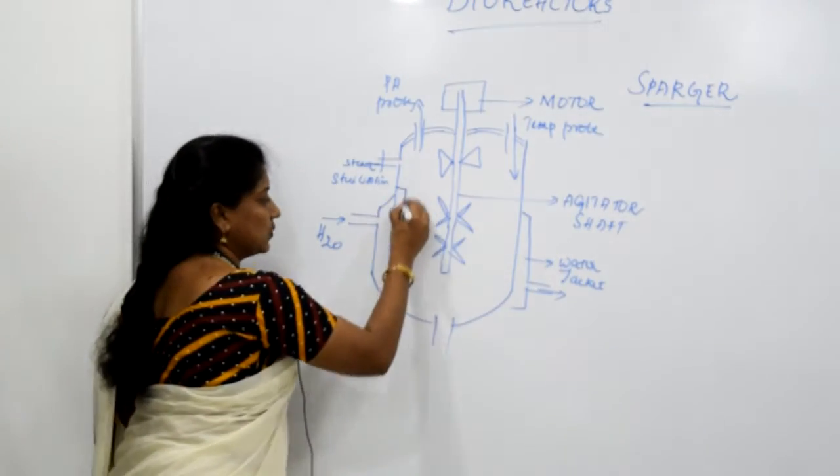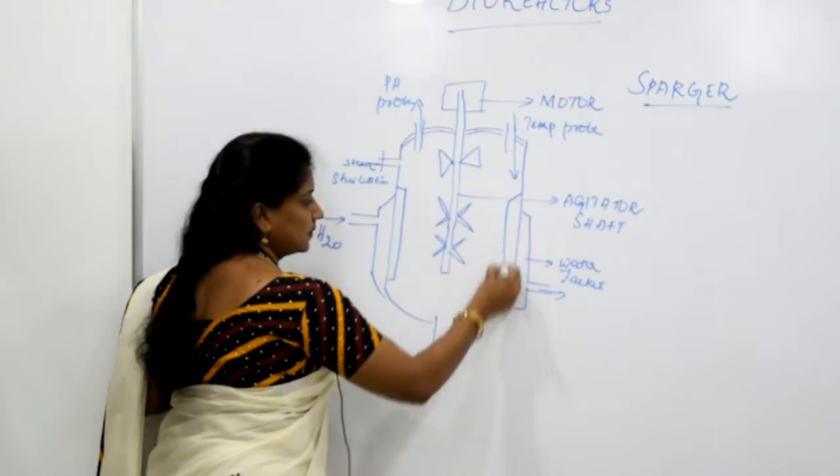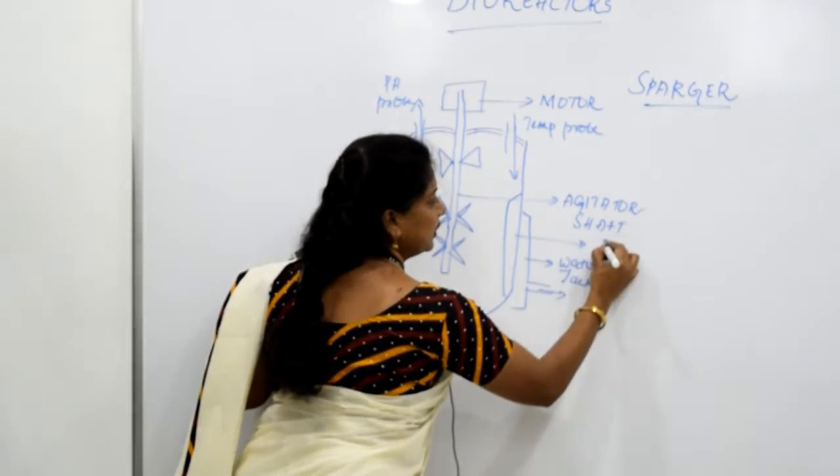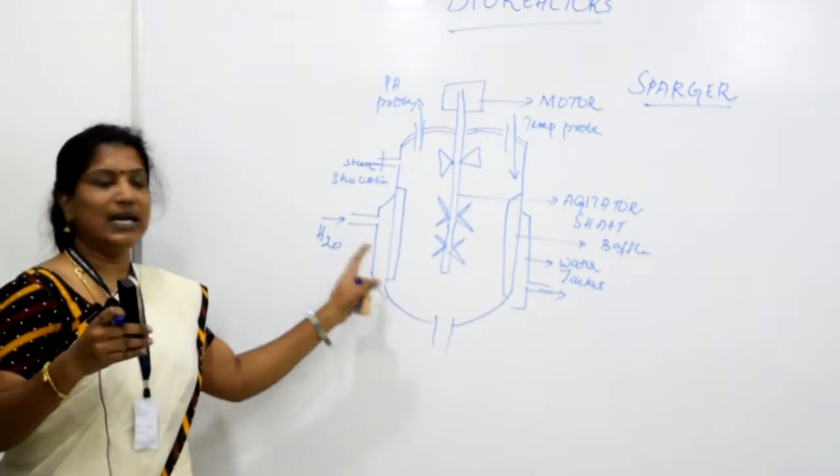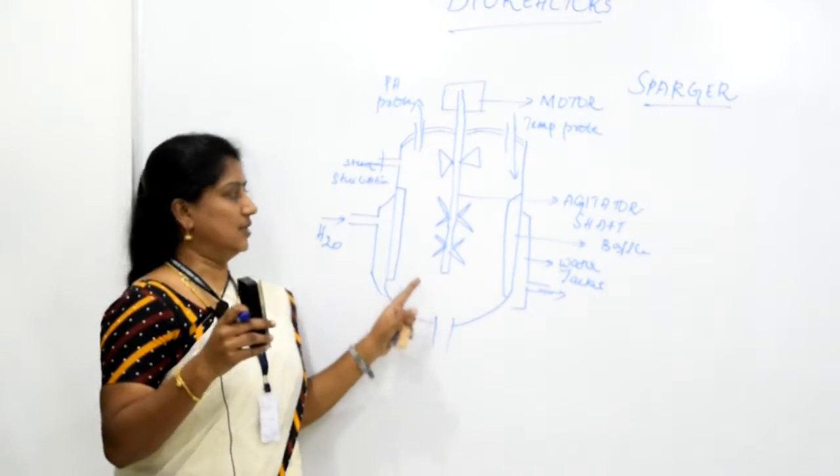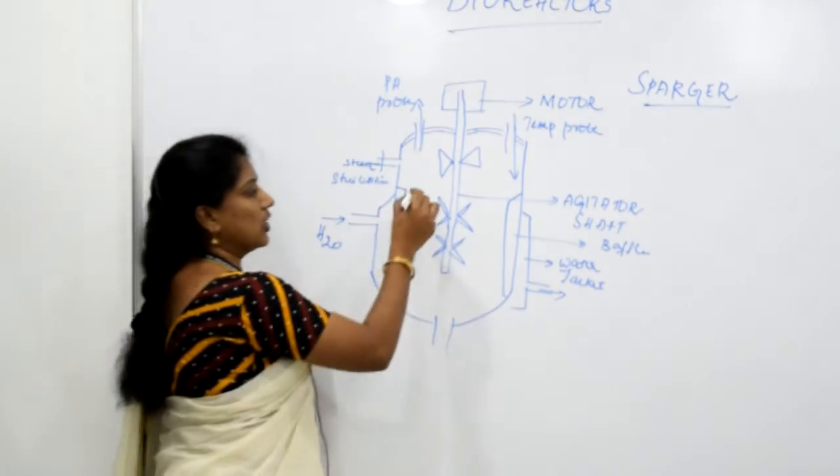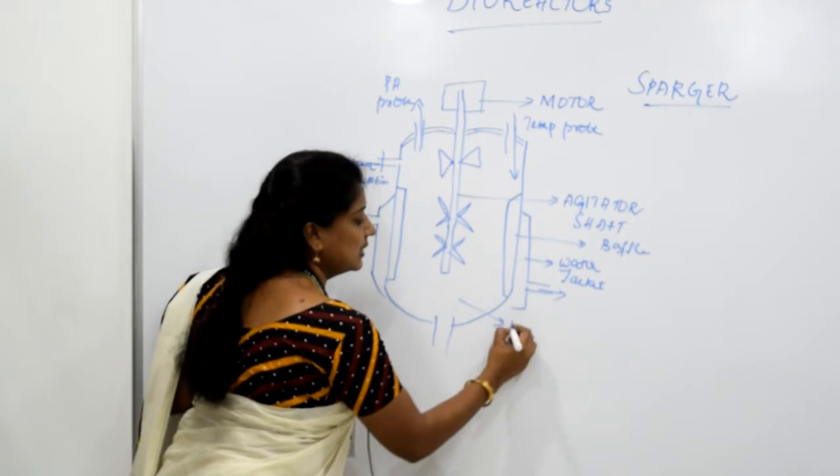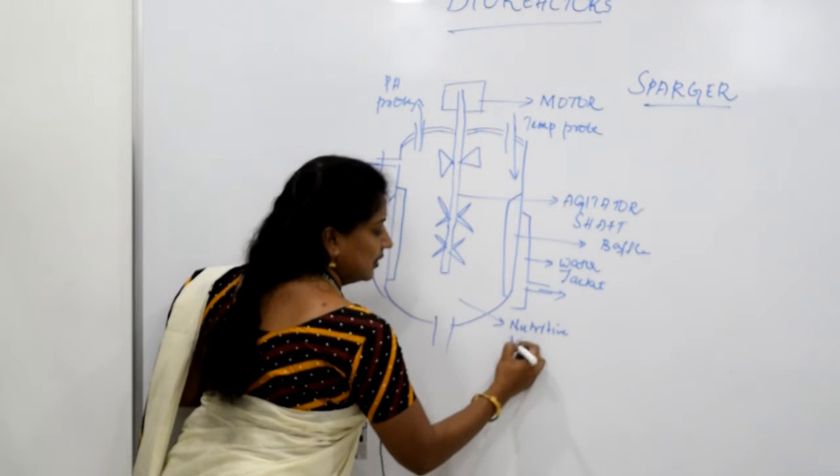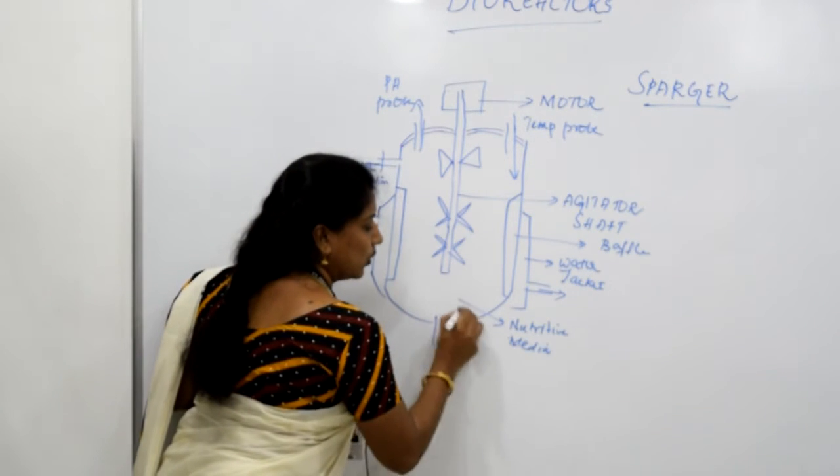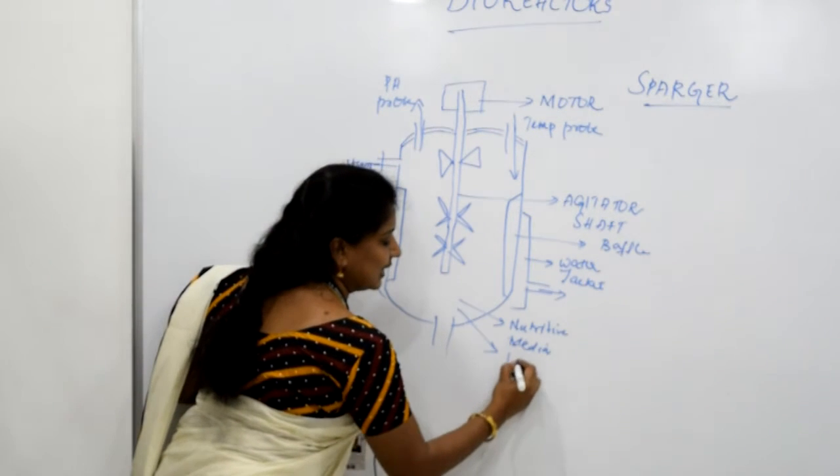There is one more part which is called as the baffle. There can be more than six number of baffles in a stir tank reactor. Now our job is to put the nutritive media. We are adding a nutritive media and along with that, you will be adding the inoculum.